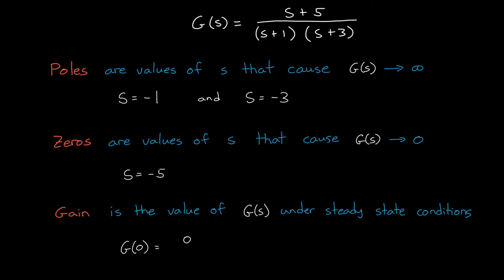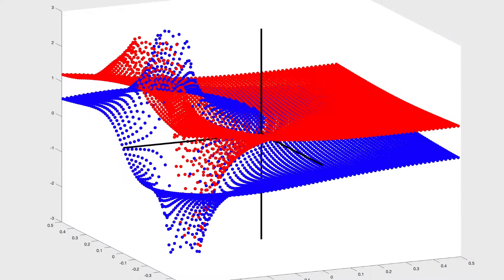Or more easily, it's the value of the transfer function when you set s to zero. And so we really only need to know these three things, poles, zeros, and gain, and we can understand the entire s domain, which is really powerful for analyzing system dynamics.